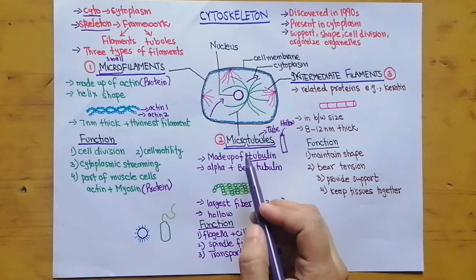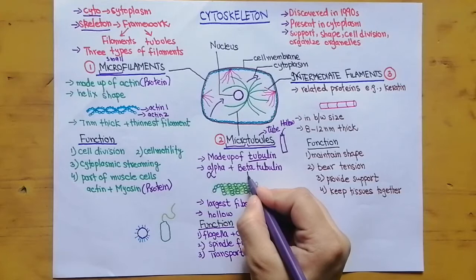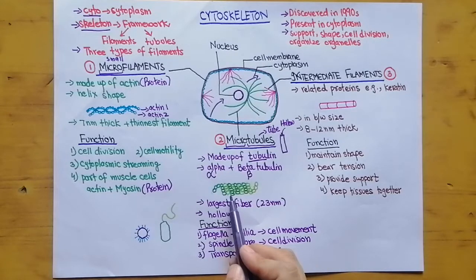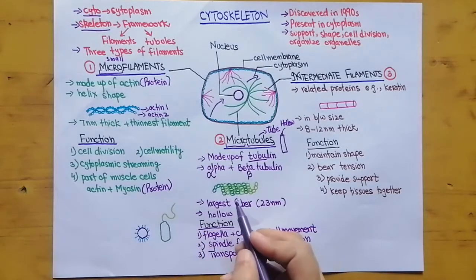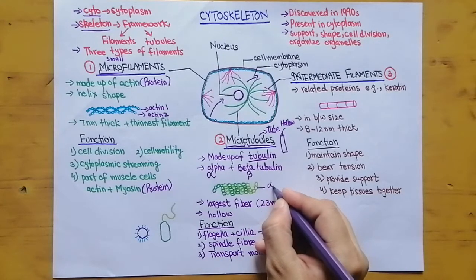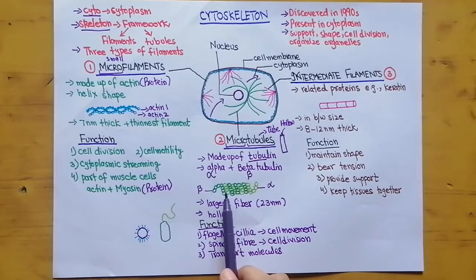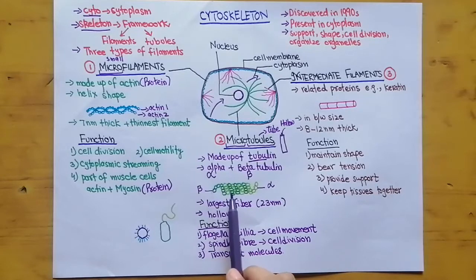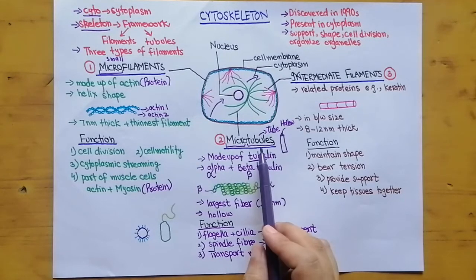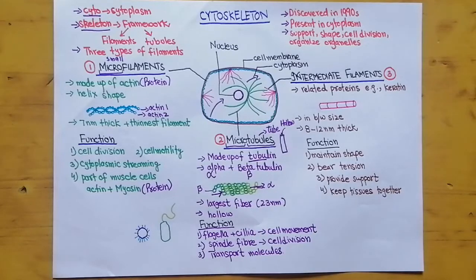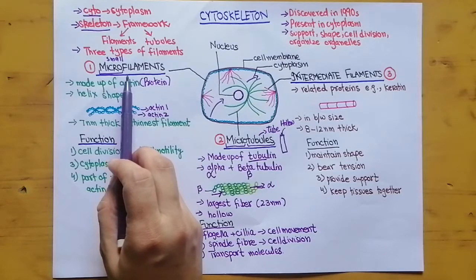There are two types of tubulin proteins that combine to form microtubules: alpha-tubulin and beta-tubulin. In the diagram, one color represents alpha and the other represents beta. They combine together spirally and alternately — beta, alpha, beta, alpha — to form microtubules. The inner part of the microtubule is hollow. Microtubules are the largest filament, with a diameter of 23 nanometers.